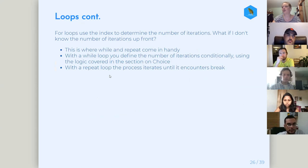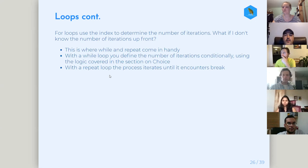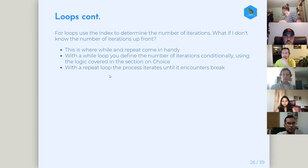With a while loop, you're effectively setting a condition. While this condition is true, do this. So if the value is less than five, continue to loop through the vector; if it's false, it stops. Then there's the repeat loop, which just goes until it encounters a break — which can effectively be indefinite.